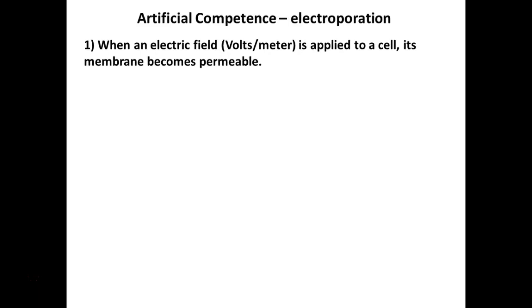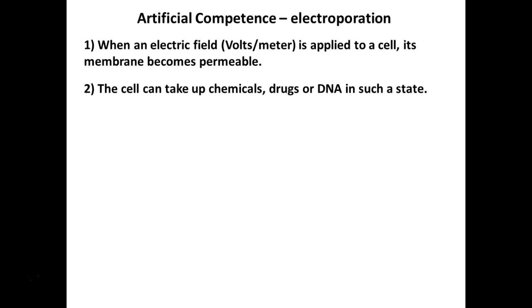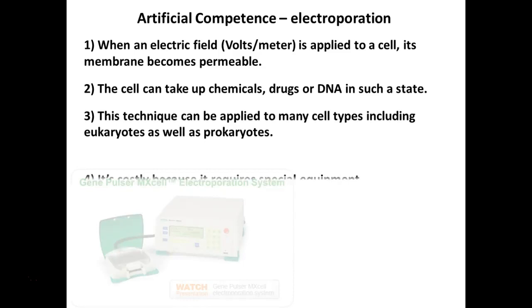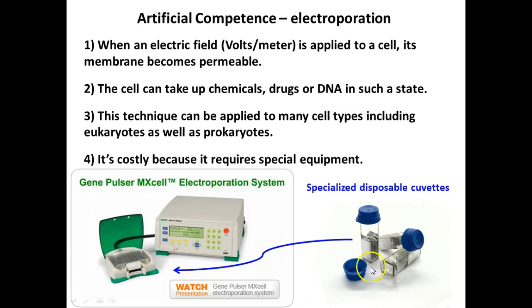Artificial competence — we can make the cells competent, make them want to take in DNA, by electroporation, applying an electric field. We obviously don't do that here at Delgado — it requires expensive machinery and specialized chambers. This technique can also be done in eukaryotes like yeast and molds, and can be used to get cells to take in chemicals or drugs, not just DNA — so we can force cells to take things in.